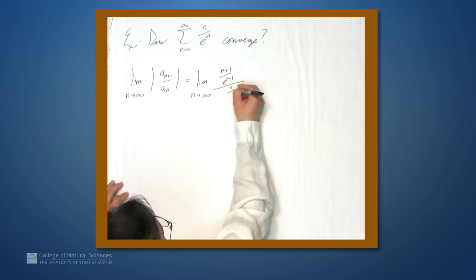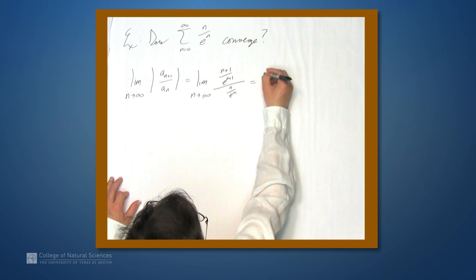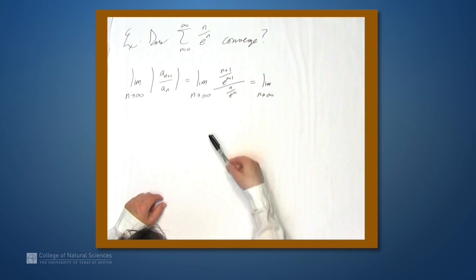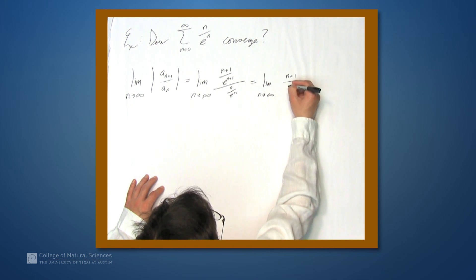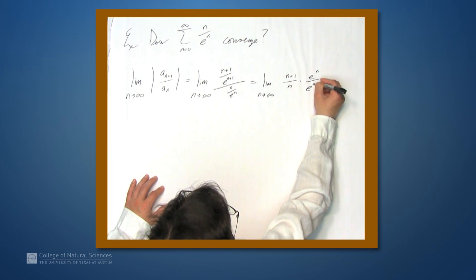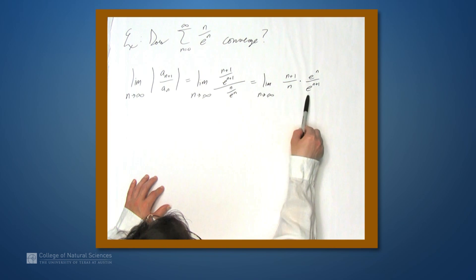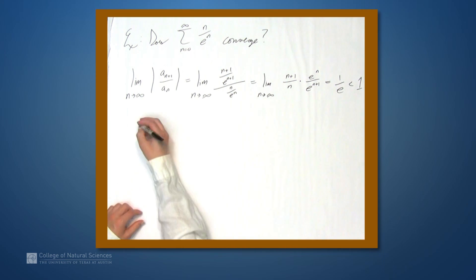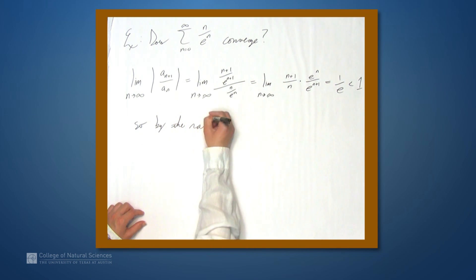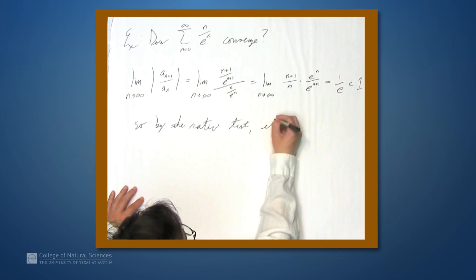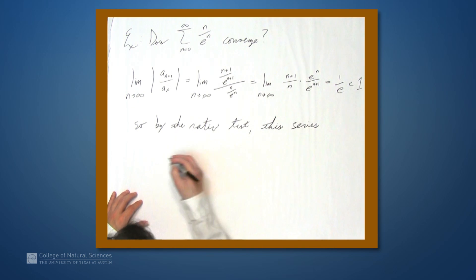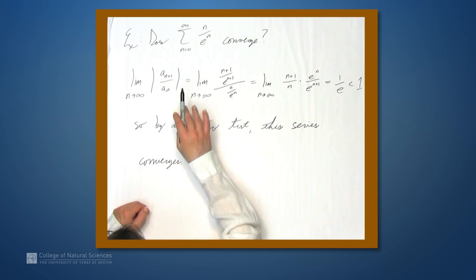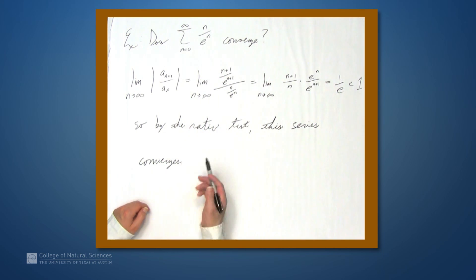This divided by n over e to the n. Instead of dividing by this, we multiply by its reciprocal. We get the limit as n goes to infinity of n plus 1 over n times e to the n over e to the n plus 1. The n plus 1 over n part goes to 1. The e to the n over e to the n plus 1 is actually fixed — it's just 1 over e. So this limit is 1 over e, which is less than 1. So by the ratio test, this series converges — in fact, it converges absolutely. Of course, if the series converges at all, it must converge absolutely because all the terms are positive.